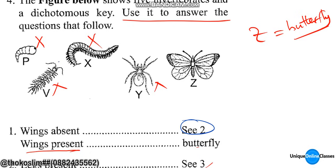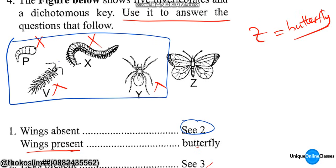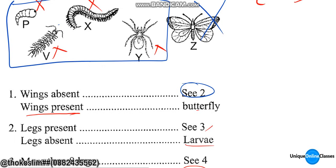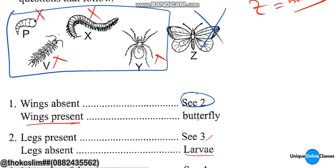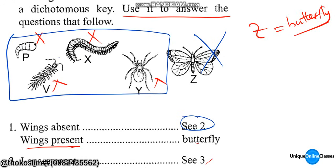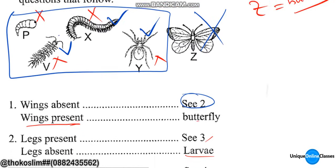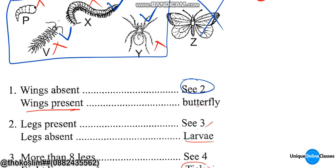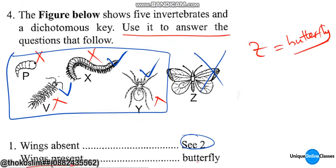Wings absent — I'm going to give you step number two. Wings present — I'm going to give you legs.